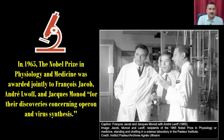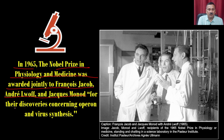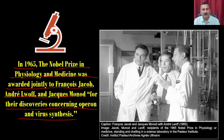The operon was proposed by Jacob and Monod as a control mechanism through which the prokaryotic system controls different types of gene expression within bacteria. In 1965, the Nobel Prize in Physiology and Medicine was awarded jointly to Jacob and Monod for their discovery concerning the operon and viral synthesis.